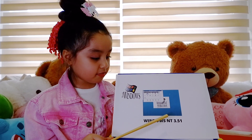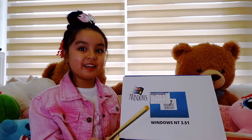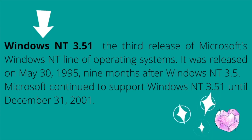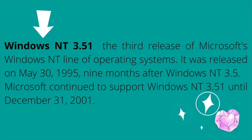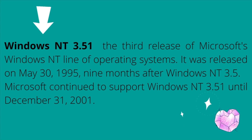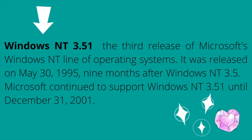The next version of Windows is Windows NT 3.51, part of the Microsoft Windows NT line of operating systems. It was released on May 30, 1995, after Windows NT 3.5. Microsoft continued to support Windows NT 3.51 until December 31, 2001.